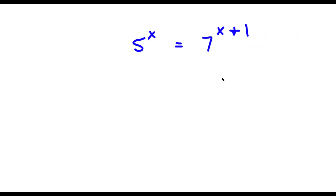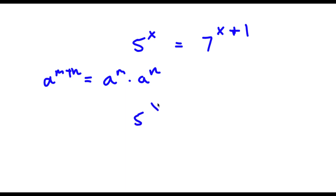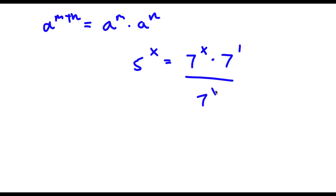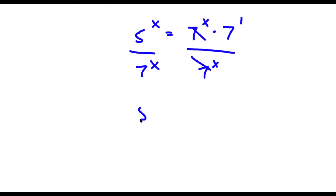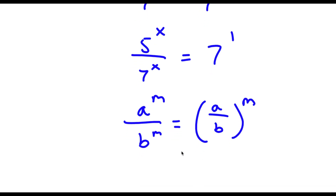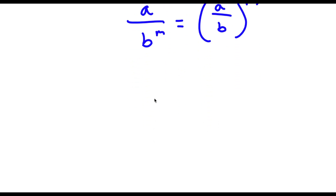Alright, so I have 5 to the power of x is equal to 7 to the power of x plus 1. Using the rule a to the power of m plus n equals a to the power of m times a to the power of n, we get 7 to the power of x plus 1 equals 7 to the power of x times 7 to the power of 1. Dividing both sides by 7 to the power of x, these cancel out. Using the rule a to the power of m over b to the power of m equals a over b to the power of m, we get 5 over 7 to the power of x equals 7.